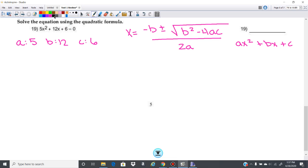and the c is the constant, so here our c is 6. So if we put this into our equation here, we've got x equals negative b, negative 12 plus or minus the square root of b squared, so 12 squared,